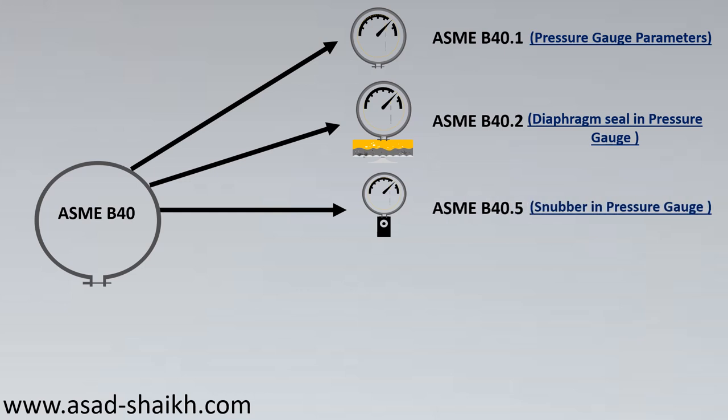The third part, ASME B40.5, deals with snubbers and pressure gauges. A snubber is a small device that can protect a pressure gauge in the long run — a lot of pressure gauge failures are attributed to improper snubber installation. As a rule of thumb, a snubber is used in high-pulsation applications such as pump discharge. Snubbers come in various types, and this standard covers which type to use and when.